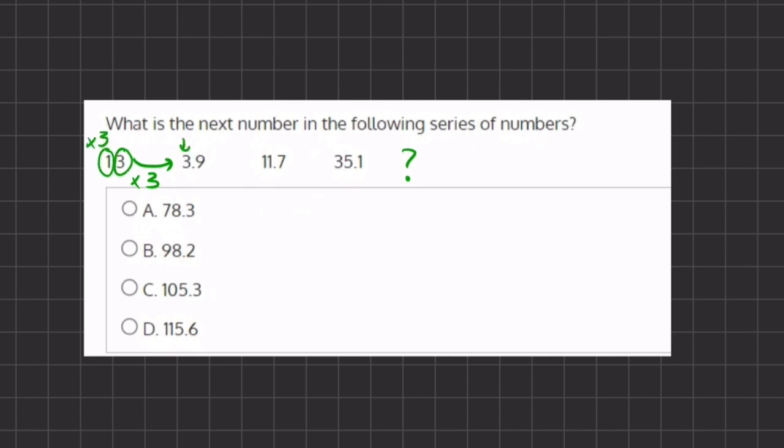And if we multiply the 0.3 times 3, we get 0.9, which is right over here. Alright, so if we continue this pattern, 3.9 times 3 gives us 11.7.